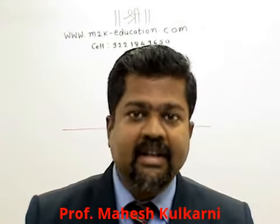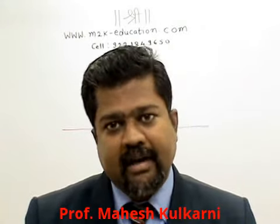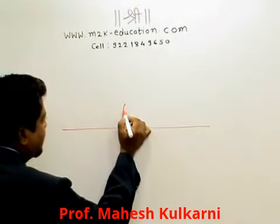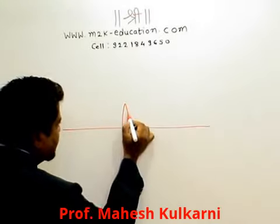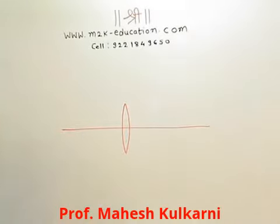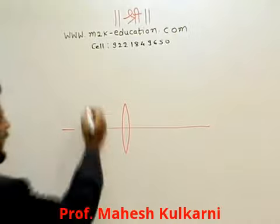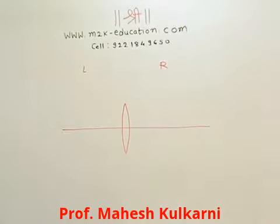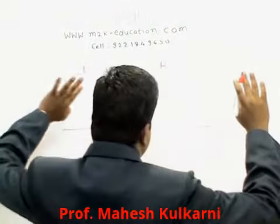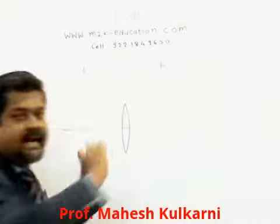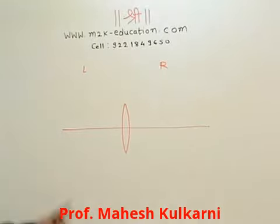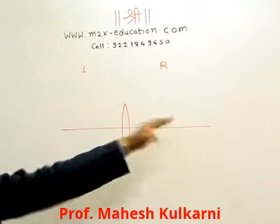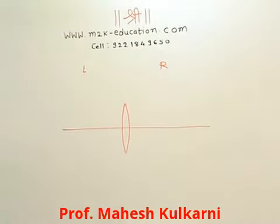According to Cartesian Sign Convention, one should consider that the lens — suppose I am holding the lens here — this is the left-hand side of the lens and this is the right-hand side of the lens. The object must be towards the left-hand side of the lens, and the image is observed on the right-hand side.